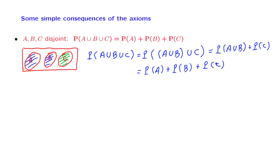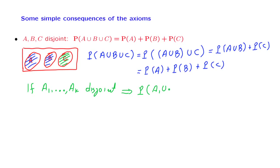This is the proof for the case of three events. You should be able to follow this line of proof for four events and so on, and you might want to continue by induction. Eventually you can prove that if sets A1 up to Ak are disjoint, then the probability of their union equals the sum of their individual probabilities — a generalization to the union of finitely many disjoint events.